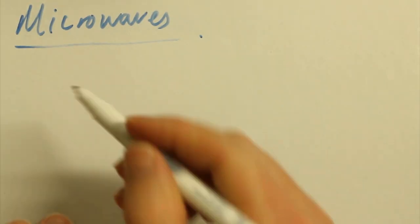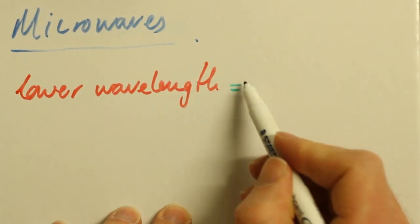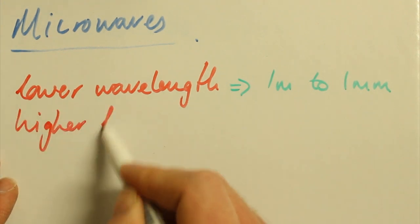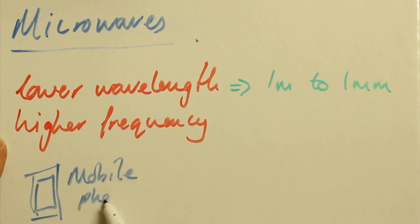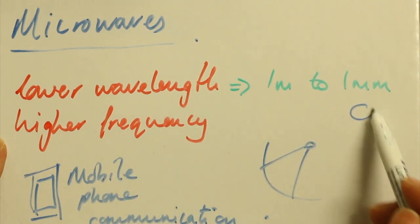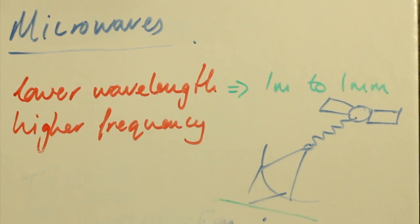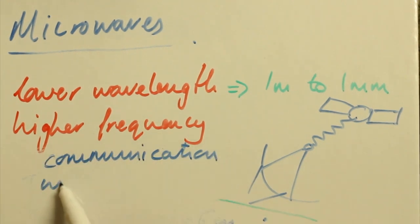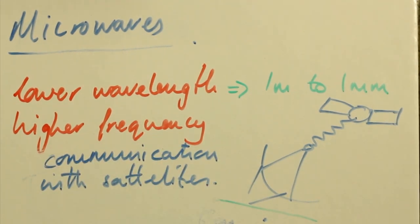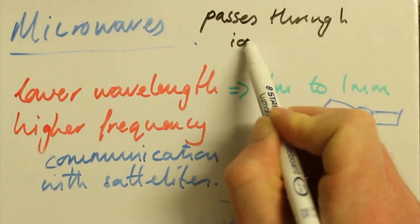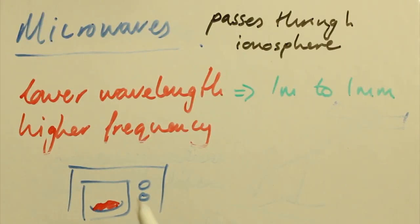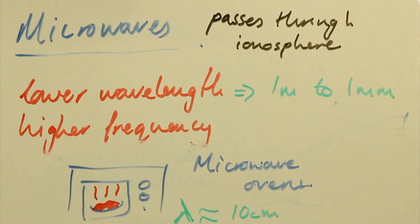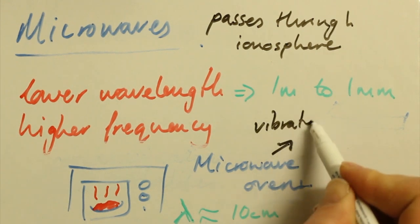Next, it's microwaves. They're shorter wavelength from about one meter to one millimeter, so that does mean a higher frequency, if you think about our wave speed equation I discussed at the start. They're used for mobile phone communication and for satellite communication, because they're not reflected or absorbed by the ionosphere. They're also used for cooking, as microwaves of almost exactly 10 centimeter wavelength transfer kinetic energy to water and fat molecules, so they can actually heat up food because of that.